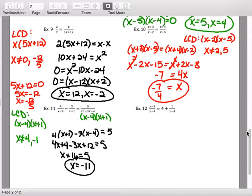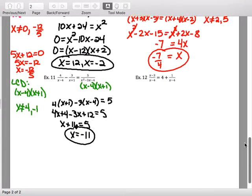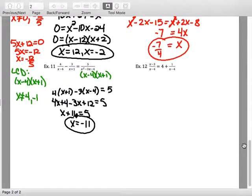All right, questions on that one? If it's the only one, you say no solution. Correct. Yes, if your answer works out to be one of your restrictions, you have to cross it out. All right, try example 12.